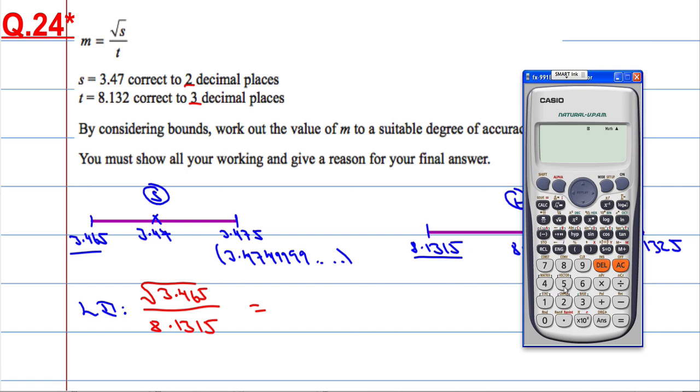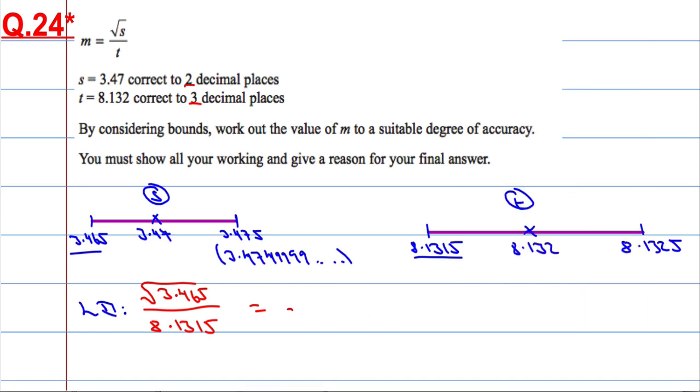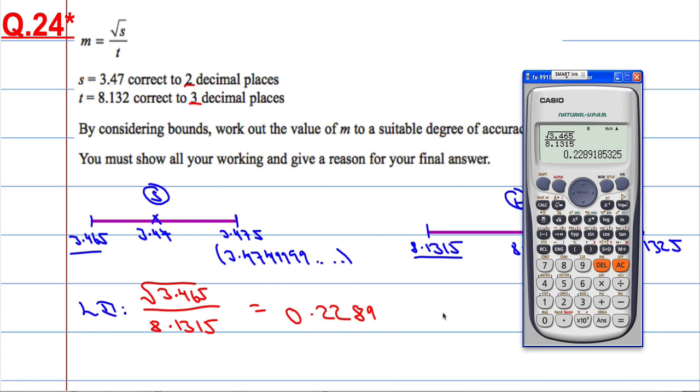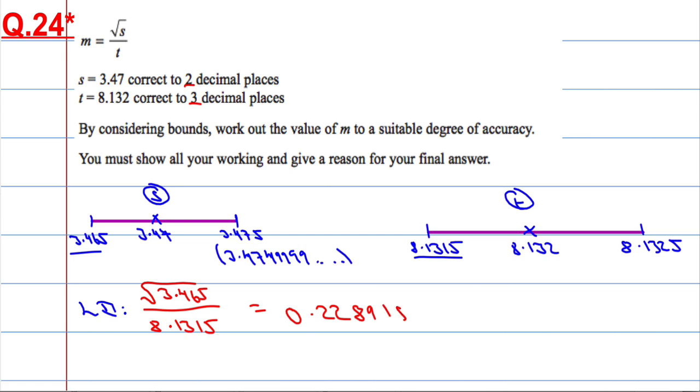So square root of 3.465 over 8.1315, which is 0.228918185325. So that's what I get.